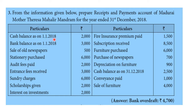Cash balance as on 1st January 2018 (opening cash): $2,000. Bank balance as on 1st January 2018: $3,000. Sale of old newspaper: $500. Stationery purchase: $6,000. Audit fees paid: $2,000. Entrance fees received: $3,000. Sundry charges: $6,000. Scholarship given: $2,000. Interest on investment: $2,000. Fire insurance premium paid: $1,500. Subscription received: $8,500.